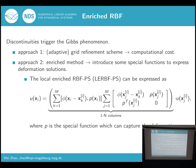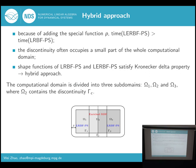Because of adding the special function, the computational time is longer than before. However, we found that the discontinuity sometimes only occupies a very small part of the whole domain. So we want to use a hybrid approach to deal with this. The whole domain is divided into three parts: Omega 1, Omega 2, and Omega 3. Only Omega 2 contains the discontinuity. In Omega 2, we consider the enriched RBF method to ensure good accuracy. For Omega 1 and Omega 3, we only use the LRBF method to save computational time.